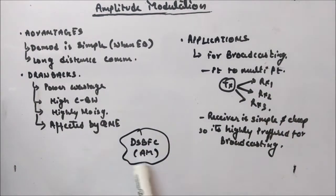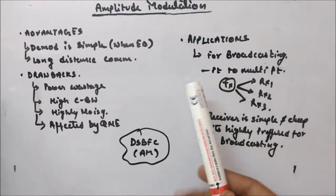So now let's end the discussion on DSBFC, which is also known as AM. Remember, until and unless someone specifies about other techniques, whenever they are talking about amplitude modulated wave, they are talking about double sideband full carrier. If they go for other methods of amplitude modulation, they will mention it. So this is for AM, DSBFC.